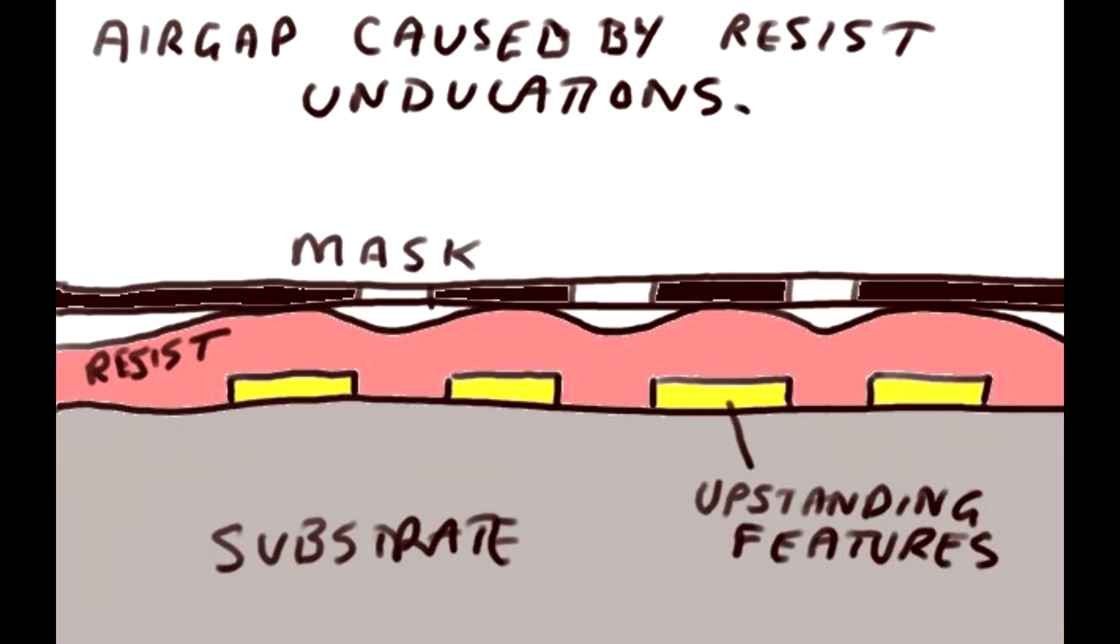This is because when you're printing a half micron with like 365 or 405 line widths, you basically have to use the minimum exposure to develop out the resist down to the bottom. And I was using one micron of resist thickness.